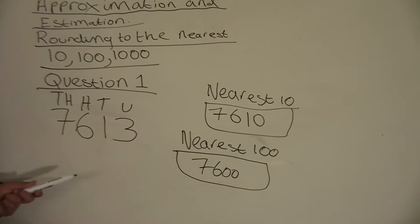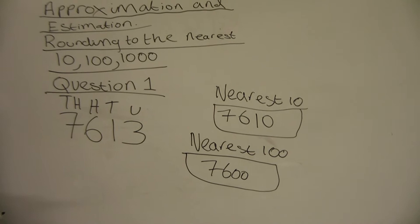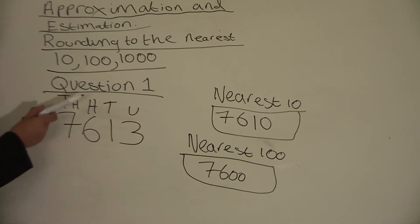Now what's left is to round it to the nearest one thousand. To do that, we will have to look at the hundreds column.